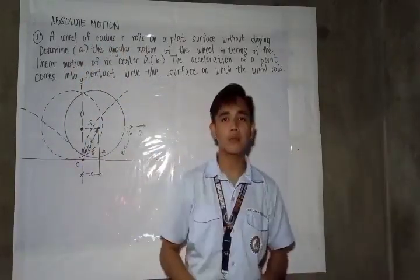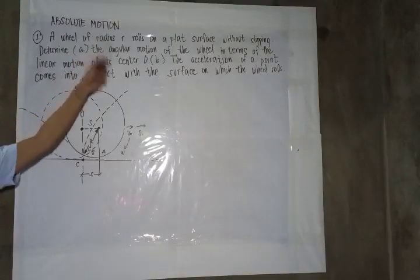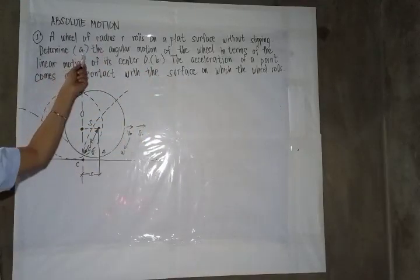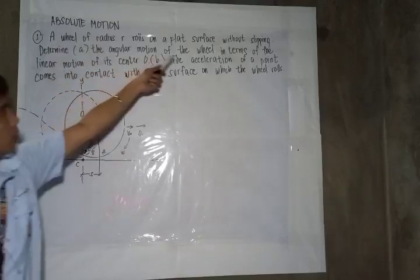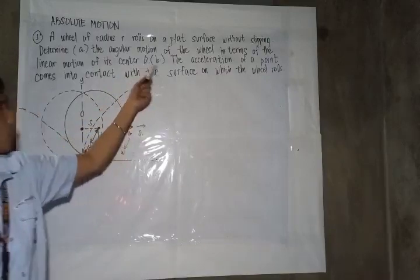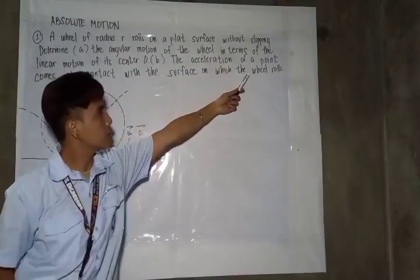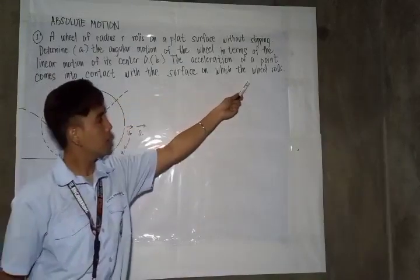So for example number 1, we have the wheel of radius R that rolls on a flat surface without slipping. Determine A, the angular motion of the wheel in terms of linear motion of its center O. And letter B, find the acceleration of a point that comes into contact with the surface on which the wheel rolls.